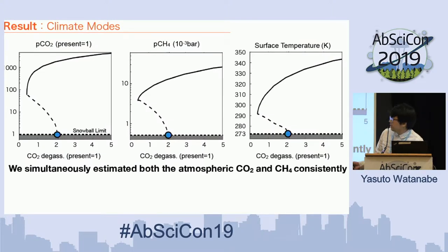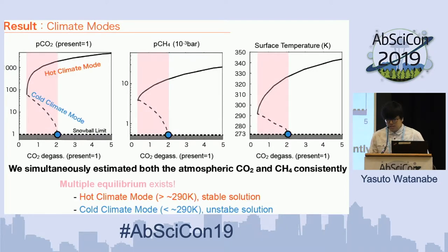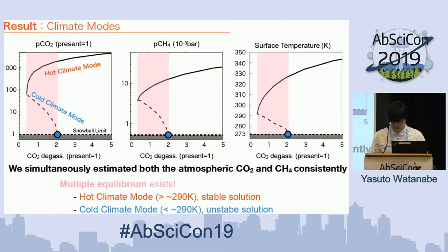Now moving to the results section. First I show the result without seafloor weathering, and on the last slide I show the result with seafloor weathering. This figure shows atmospheric CO2, methane, and surface temperature at different CO2 degassing rates. As you can see, we simultaneously estimated both the atmospheric CO2 and methane at the same time. On the shaded area, multiple equilibria exist: one is a hot climate mode with a high CO2 level, and the other is a cold climate mode which is an unstable equilibrium state.